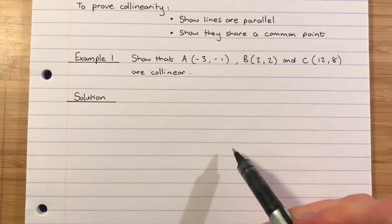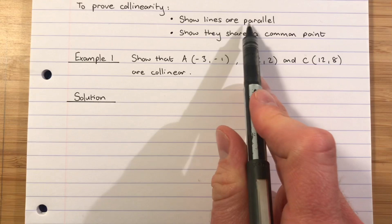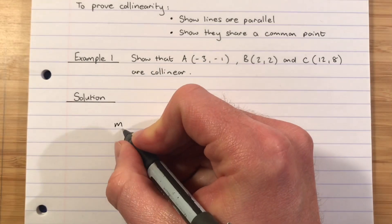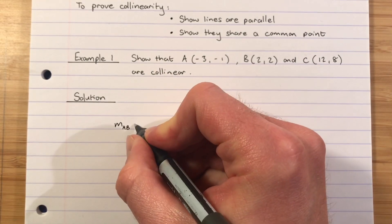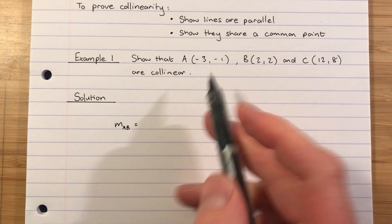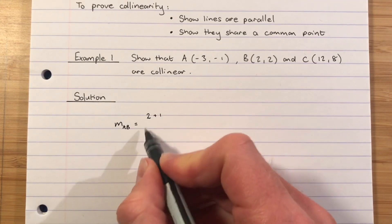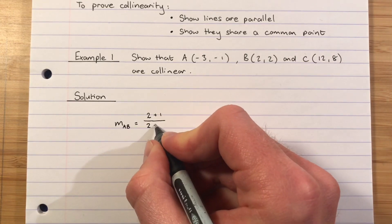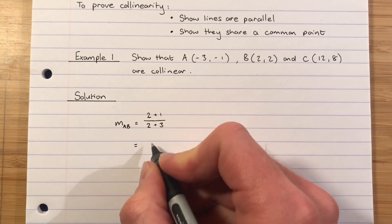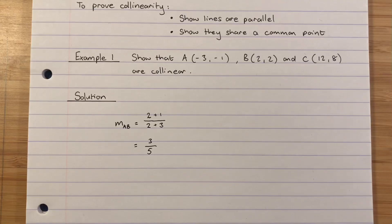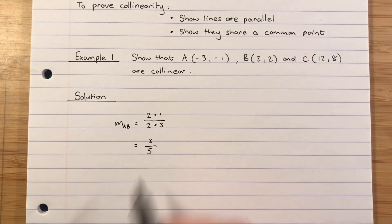We find the gradient m_AB. The gradient between A and B is (2 − (−1)) over (2 − (−3)), which gives us 3 over 5. So the gradient of the line joining A to B is 3/5.